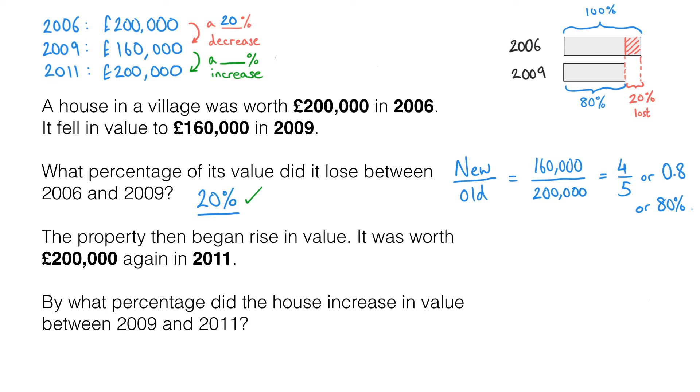Right, next we need to work out what the percentage increase is from 2009 to 2011. Now you might be looking at this and thinking wait a minute, it went from 200,000 down to 160,000 but then it's going back to the same original value again. It's going back to 200,000. So if we had a 20% decrease surely we have a 20% increase here. I'm afraid the answer to that is no. It doesn't work like that and I'm going to show you why. Let's consider what's going on here.